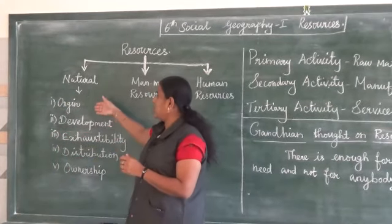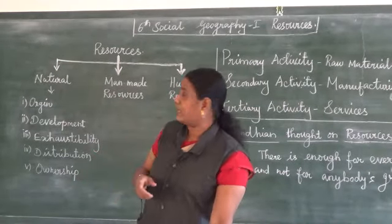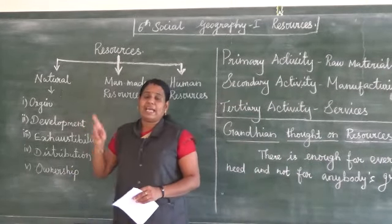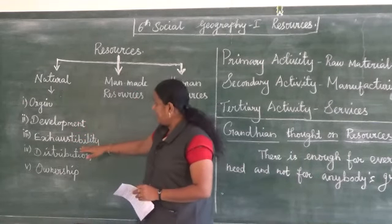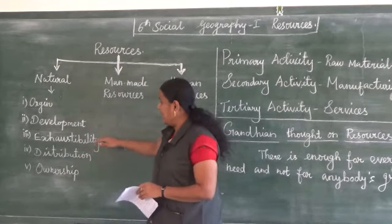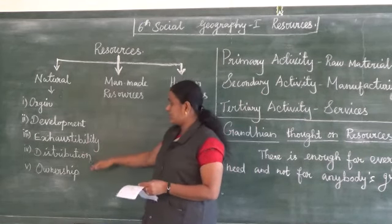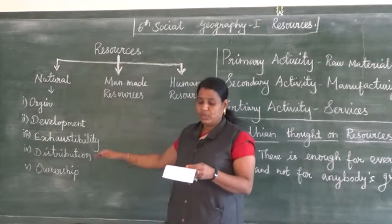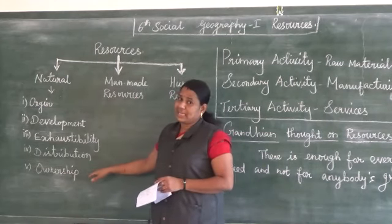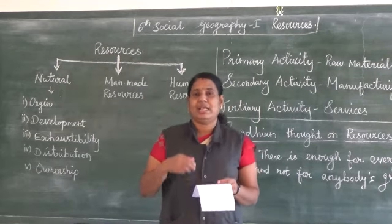Based on origin, natural resources are classified into two: biotic and abiotic. Based on development, they are classified into actual and potential. Based on accessibility — also called renewability — they are classified into renewable and non-renewable. Based on distribution: localized and universal. Based on ownership: individual, community-owned, national, and international.